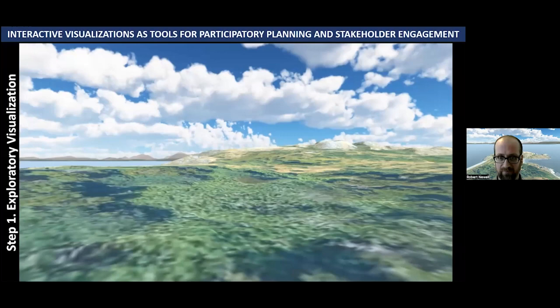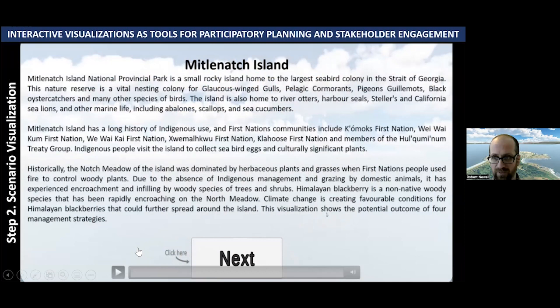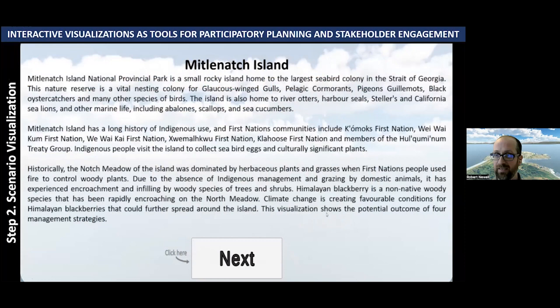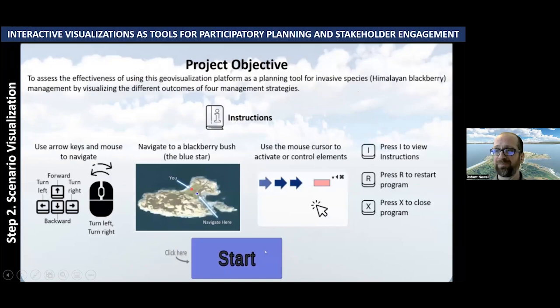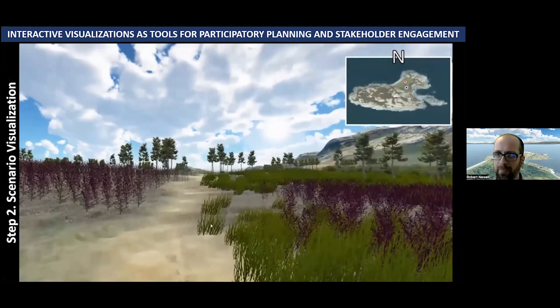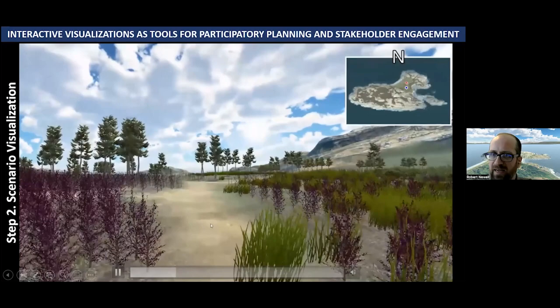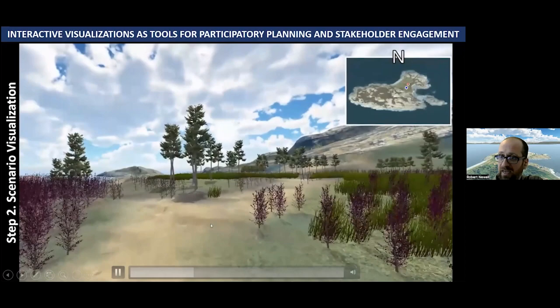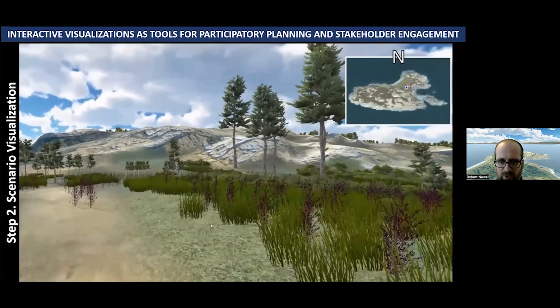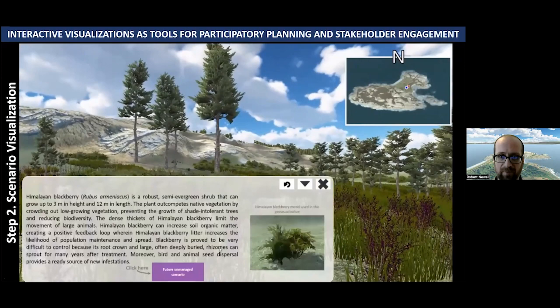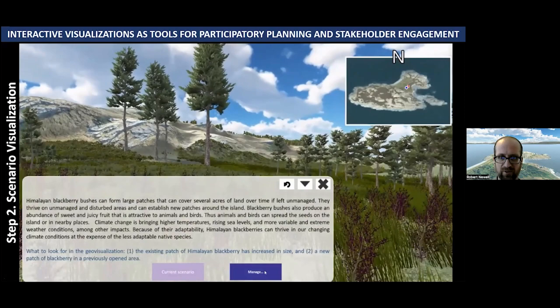Version two is quite different from version one. After taking feedback and making tweaks, one of the first things you notice is that people were having challenges navigating version one, so we now have a map always in display to help people navigate. The visualization centers on Himalayan blackberry management scenarios. As you get closer to a space you're supposed to interact with, a pop-up appears to indicate where to look at the scenarios — creating a more guided experience, which was another suggestion from participants.